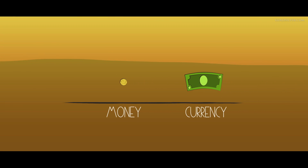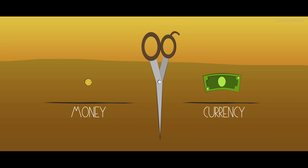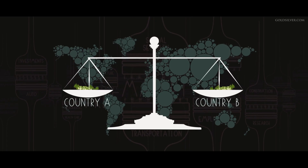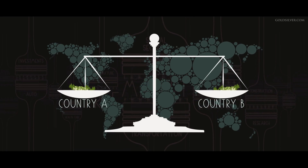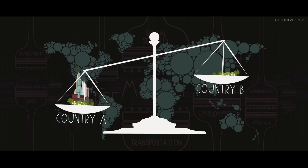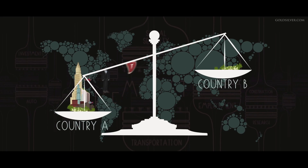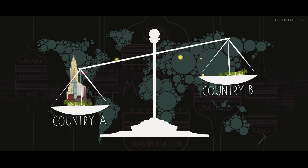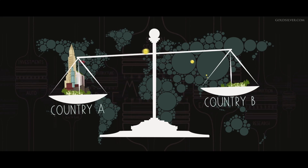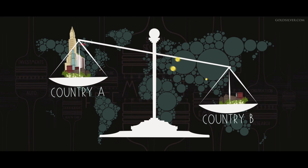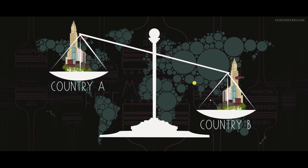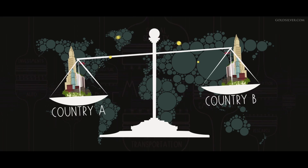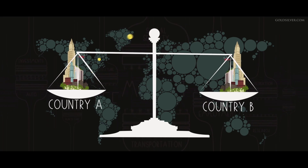The next step was to sever the connection between money and currency entirely. Back when we used real money, gold would automatically balance all economies. When one country experienced an economic boom, they would import cheap goods from countries with depressed economies and lower wage rates. The outflows of gold from the boom country would cause deflation, cooling the economy, while countries experiencing gold inflows would boom, causing their labor rates and prices to rise. This meant that trade imbalances would always automatically rebalance.